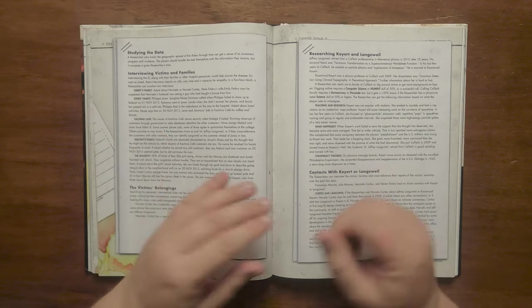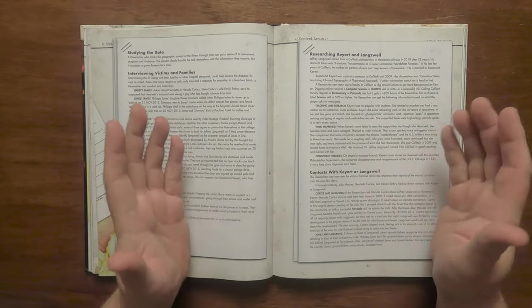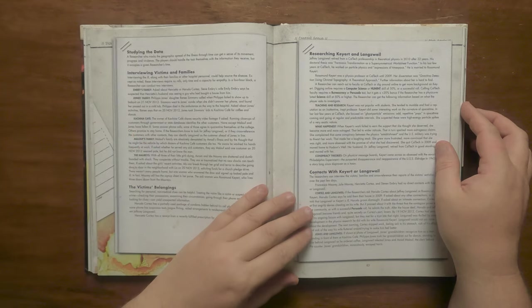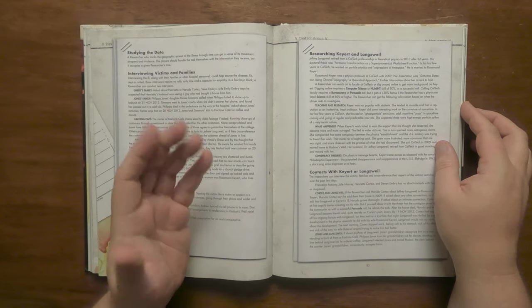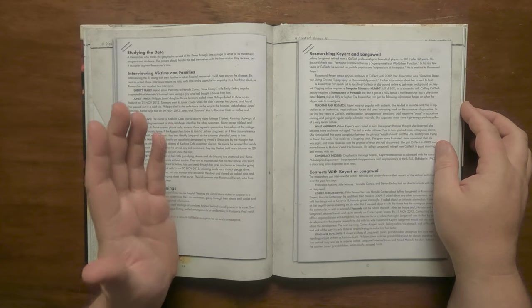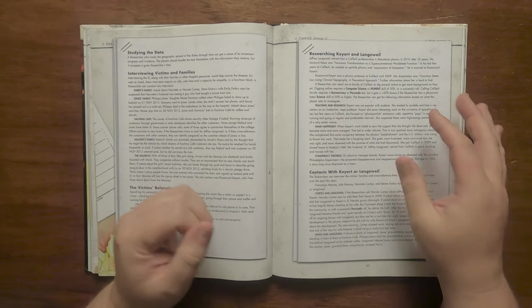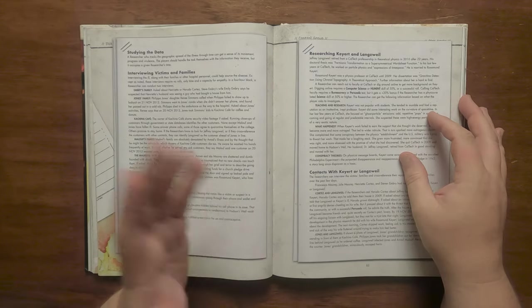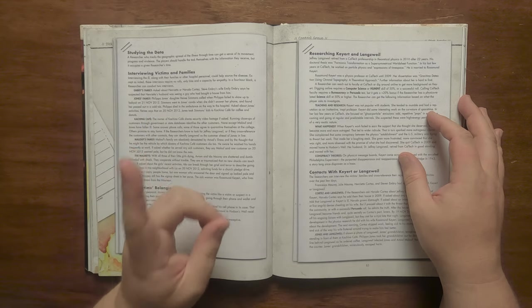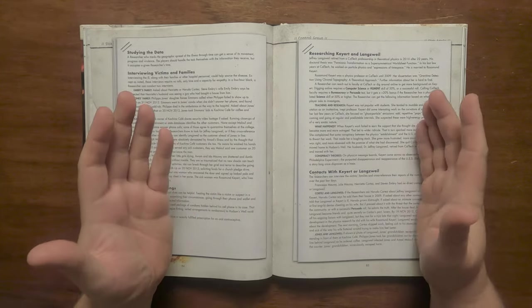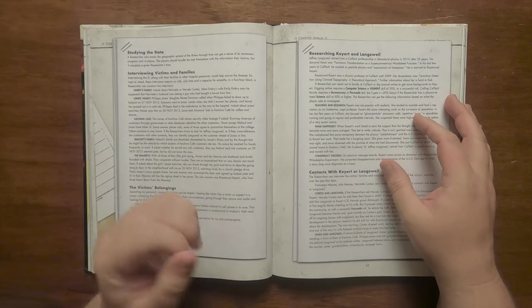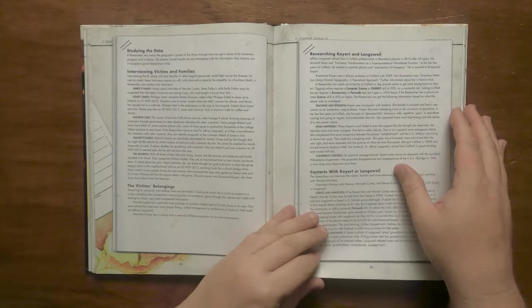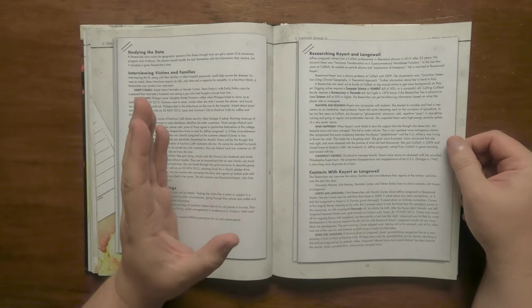So at some point they can look into Kyat and Langsville. The researchers can find out that Langsville retired from a professorship at Caltech in 2010 after 22 years and who worked on particle physics and expressions of time-space in his last few years. He is married to Rosamund Kyat. She was a physics professor at Caltech until 2009, whose dissertation was Gravitino detection using chronal topography, a theoretical approach, though more information is hard to come by. A bit of digging can reveal that she was not popular among the students and had a reputation of being inept and was focused on something called a ghost particle. As time passed by she didn't receive any recognition and became resentful, feeling that the physics establishment was holding her back. She grew more and more frustrated and single-minded about the potential promise of what she had discovered, hence she quit Caltech and moved to Hudson's Well with her husband, retiring in good standing and following her.